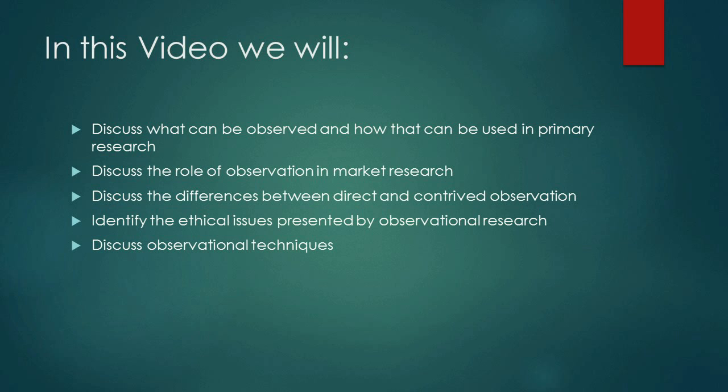Without any further ado, let's take a look at what we're going to cover in this part of the course. First, we're going to discuss what can be observed and how that can be used in primary research. Next, we'll look at the role of observation in market research. After that, we'll look at the differences between direct and contrived observational research. Then, we'll identify some ethical issues with observational research, and look at various techniques used in it.